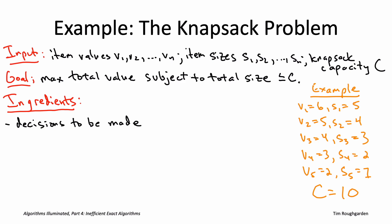The decisions to be made, the constraints that have to be respected, and the objective function to be optimized. The decisions: we need to make a binary decision for each of the n items. For each item i, we need to decide whether it's going to be included in the knapsack or not.